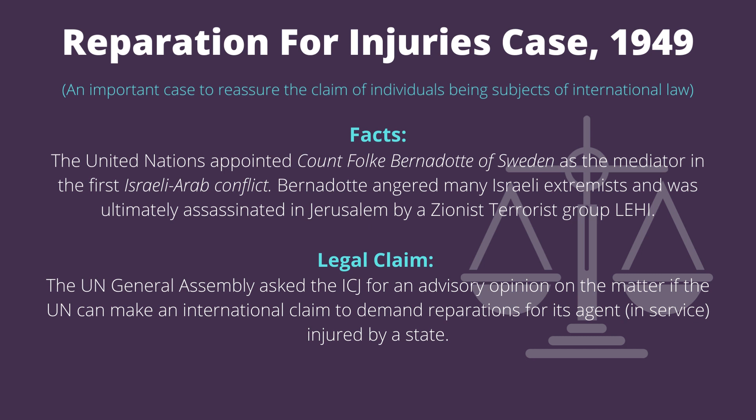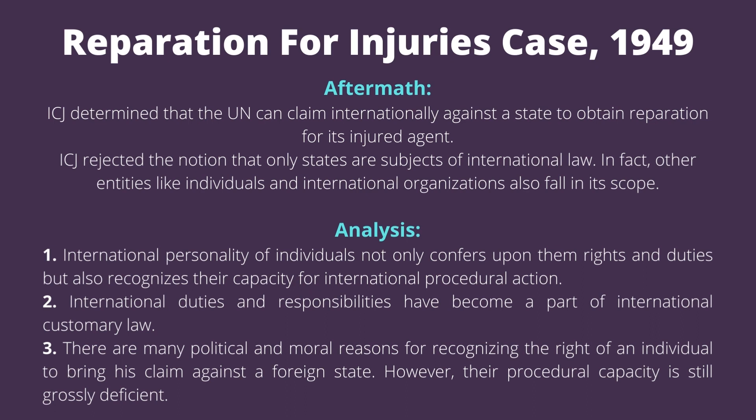The UN General Assembly asked the ICJ for an advisory opinion on whether the UN can make an international claim to demand reparations for its agent injured by a state. The ICJ determined that the UN can claim internationally against a state to obtain reparation for its injured agent. The ICJ rejected the notion that only states are subjects of international law; other entities like individuals and international organizations also fall within its scope.